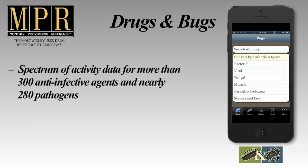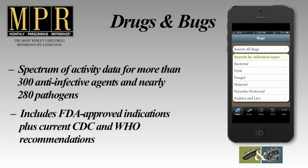Featuring a database of more than 300 anti-infective agents and nearly 280 pathogens, Drugs and Bugs provides comprehensive information on anti-infective spectrum of activity. Developed by an infectious disease specialist and maintained by MPR's team of pharmacists, Drugs and Bugs provides current FDA-approved recommendations as well as current CDC and WHO recommendations.